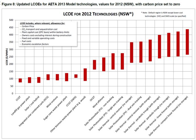The levelized cost of electricity, also known as levelized energy cost, is the net present value of the unit cost of electricity over the lifetime of a generating asset. It is often taken as a proxy for the average price that the generating asset must receive in a market to break even over its lifetime.